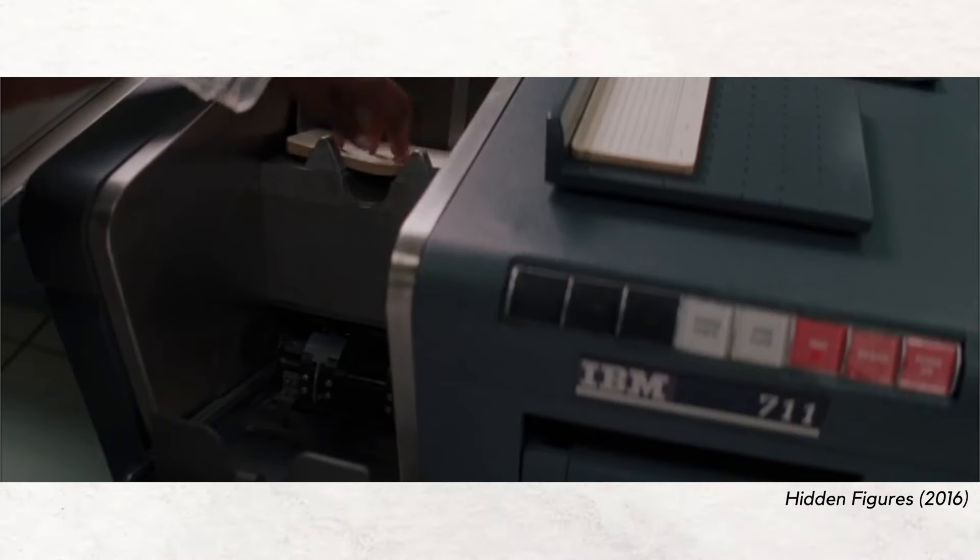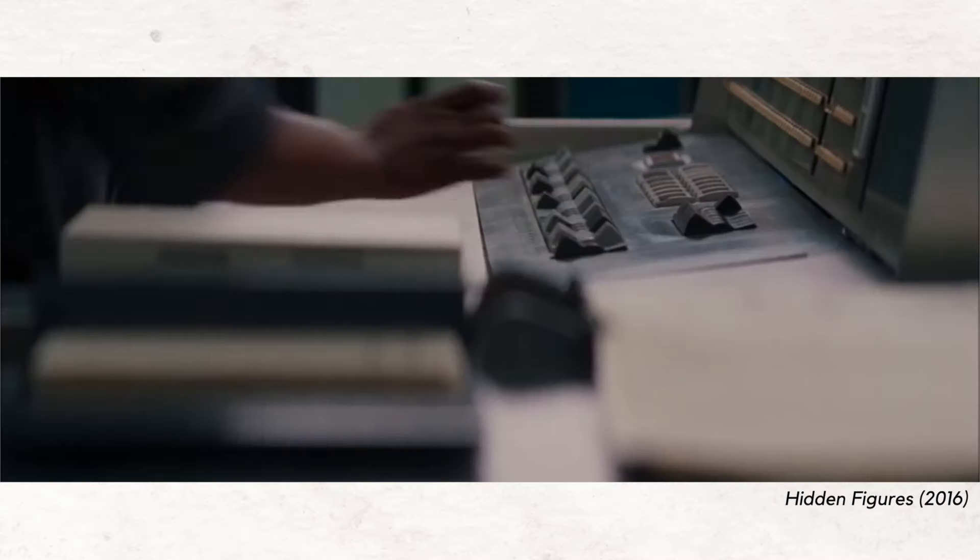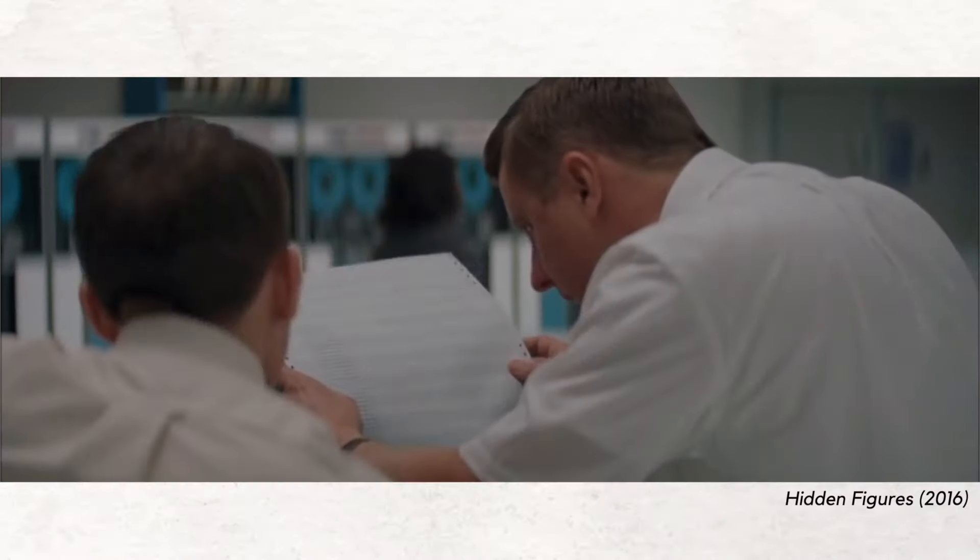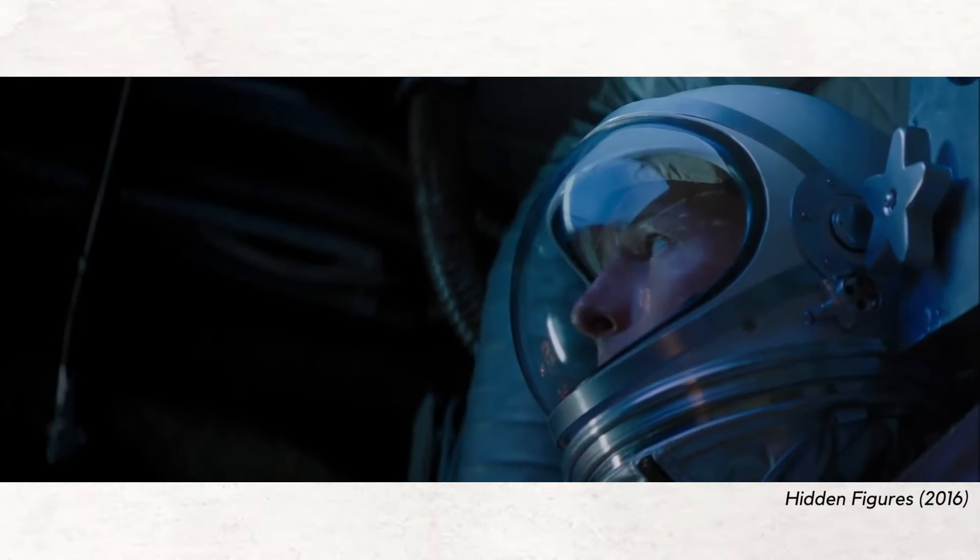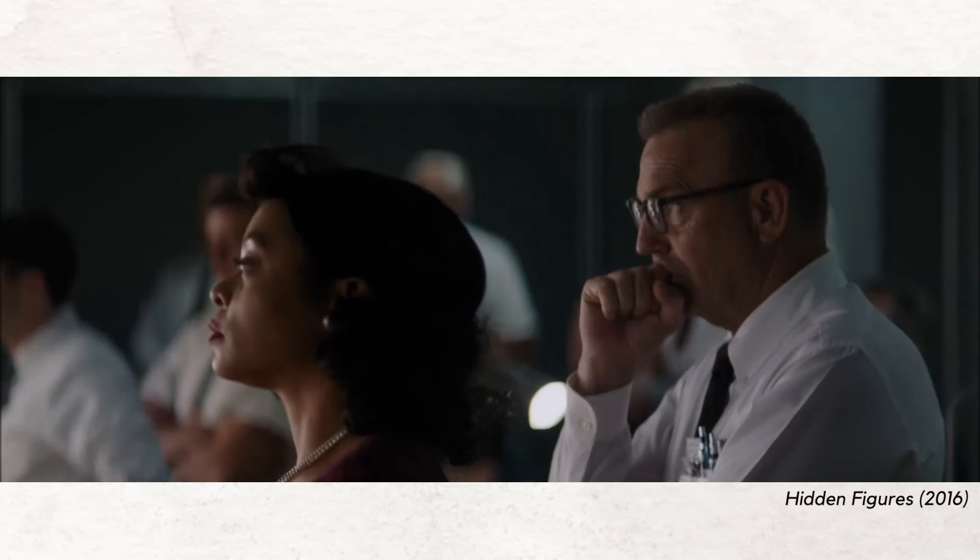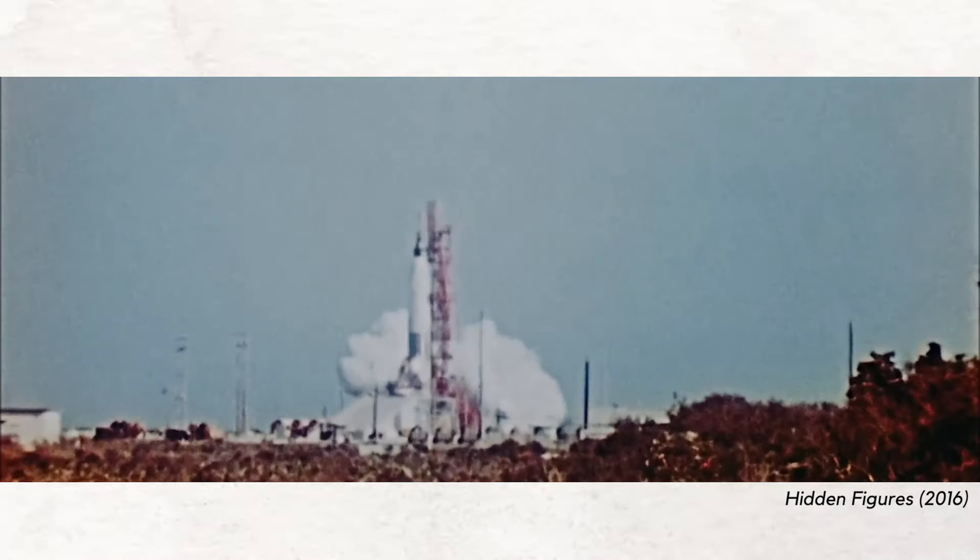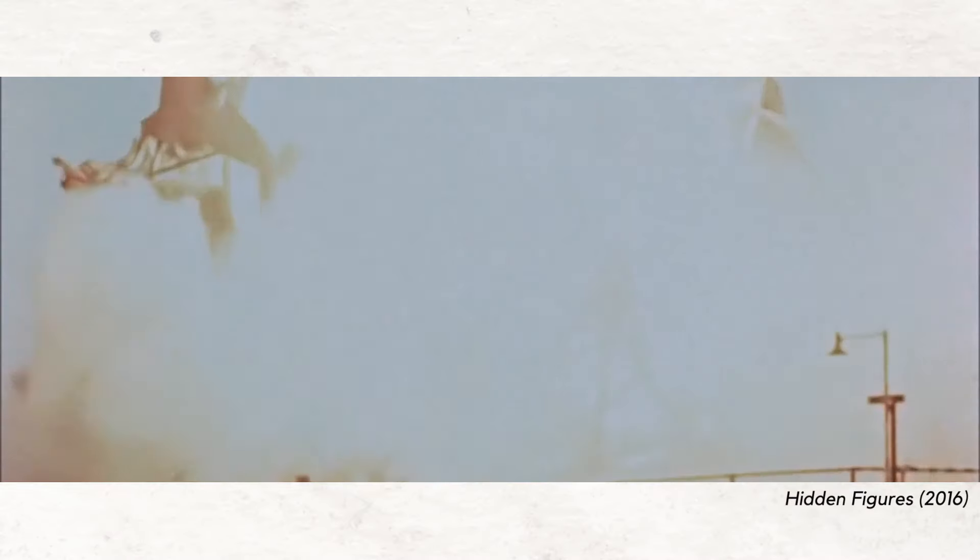When the big IBM computer was first used to calculate the trajectory of a flight, astronaut John Glenn actually asked if Katherine Johnson could verify the calculations so that he could feel confident going up. She reproduced some of the computer's calculations by hand to make sure it was doing the right thing.